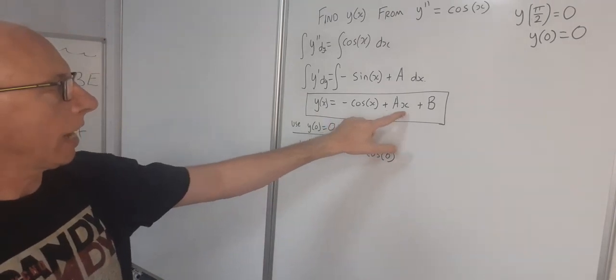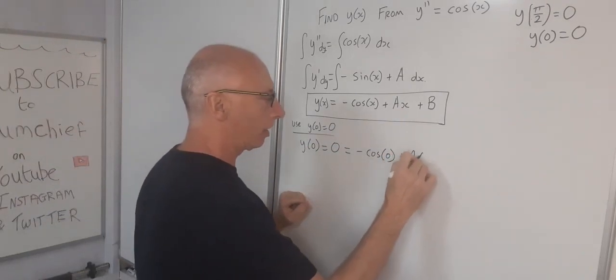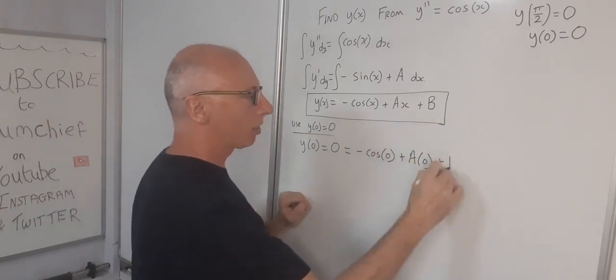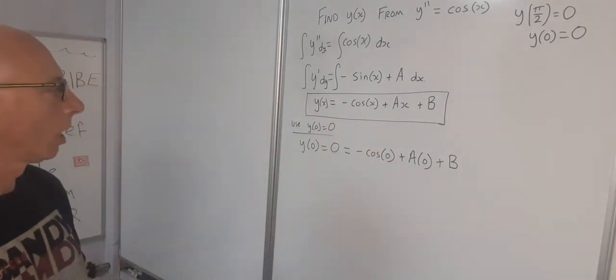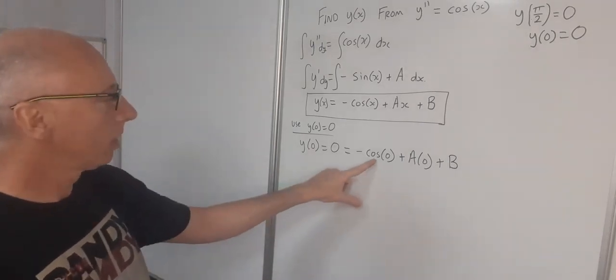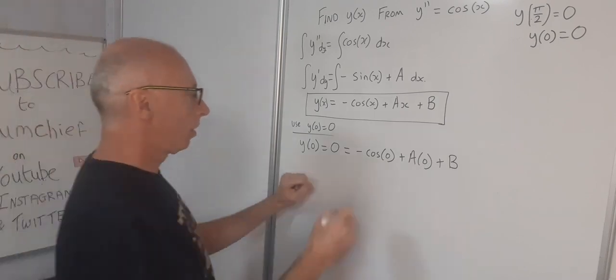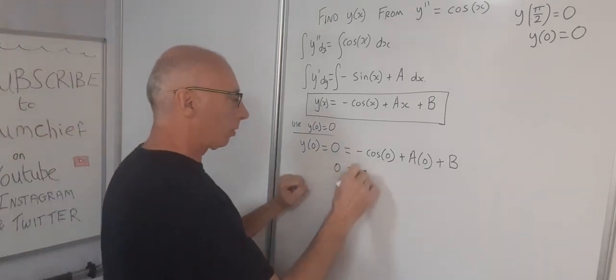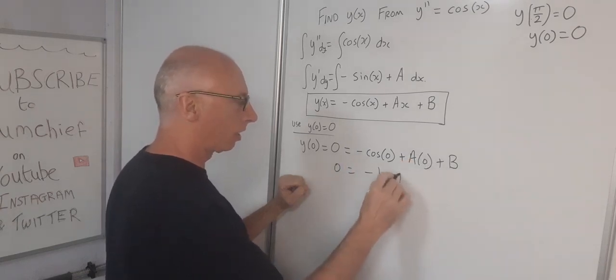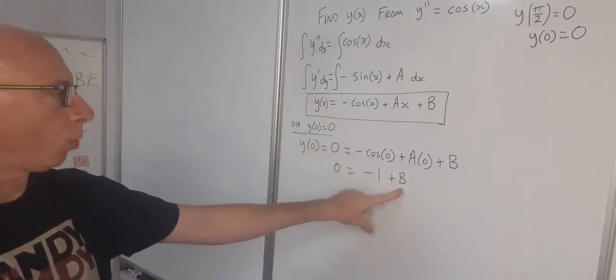Now what about plus ax? Well, x is 0, so that's plus a times 0, so that's going to disappear. b is a constant, so that's going to stay. So now let's work out what we've got here. So cosine of 0 is 1. So we've got 0 equals minus 1 plus 0, so that goes plus b.